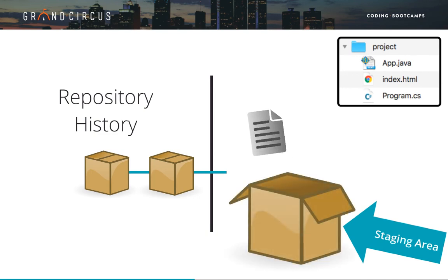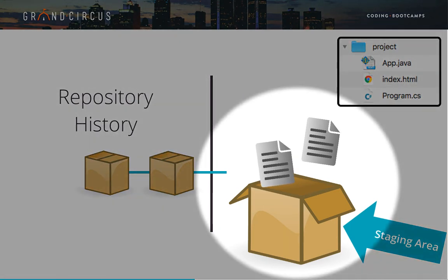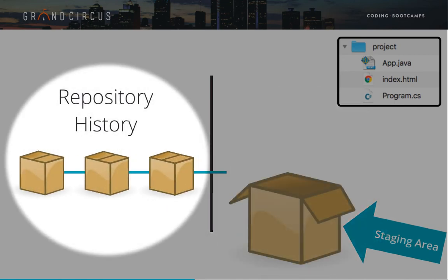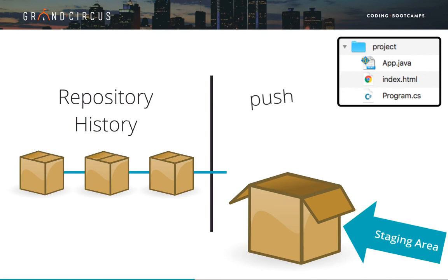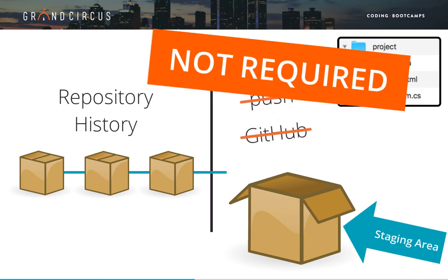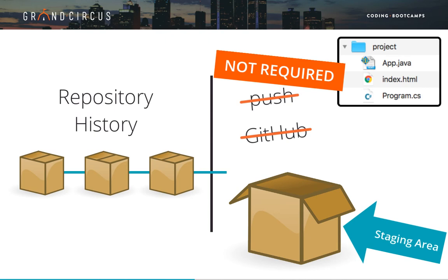The process continues as work continues on the project. We always have a working directory and staging area representing the current files and changes, and we have a timeline of commits in the repository representing snapshots of the project at different points in the past. Note that staging, commits, and the timeline of snapshots all work without pushing or using GitHub at all. We often do connect our local repository with GitHub, but this is not required.